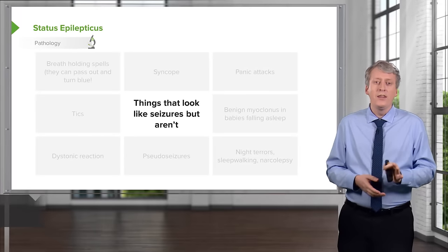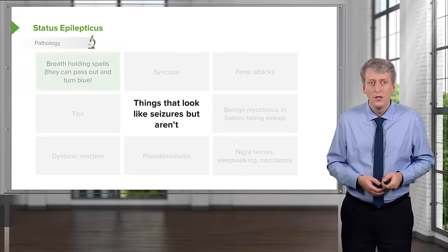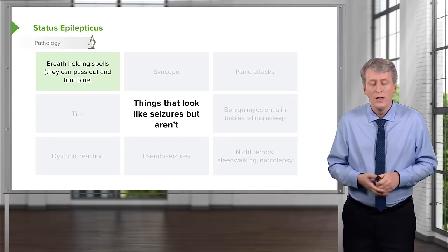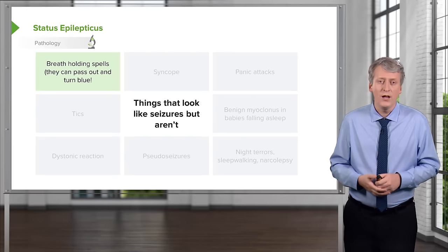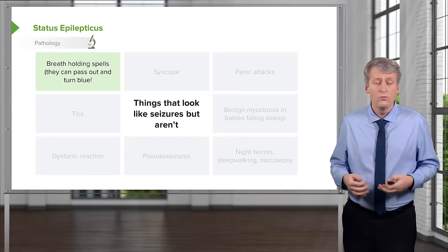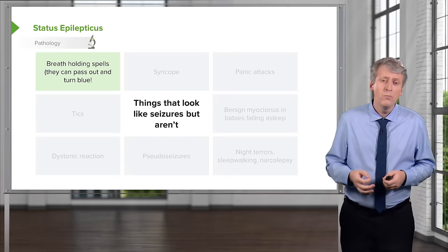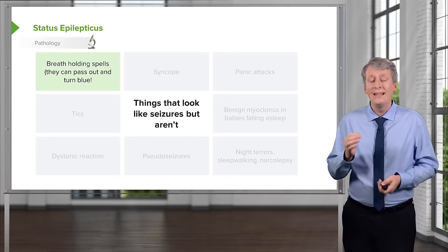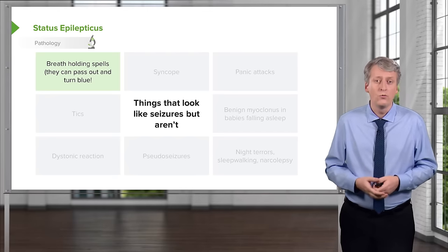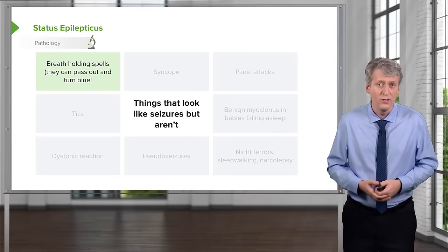Keep in mind there are things that children do that look a lot like seizures but aren't. Breath-holding spells can be truly remarkable. They start around six months of age and can go for several years. They usually happen when a child is upset or terrified — they hold their breath until they turn blue and literally pass out unconscious. Children tend to outgrow this with no long-term sequelae, but there's a lot of counseling needed for families.